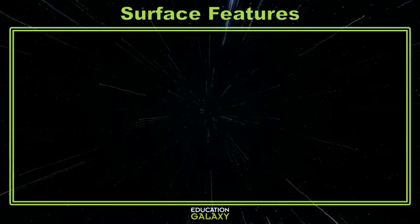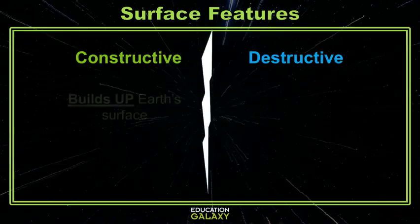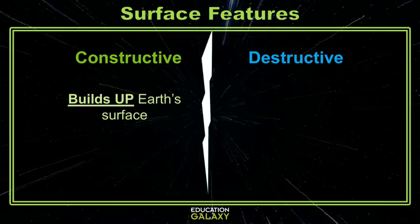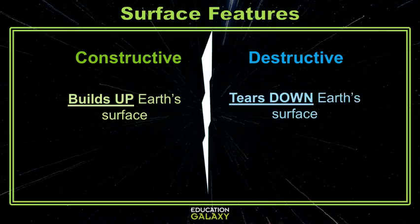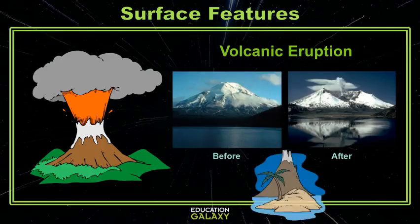There are two ways the surface of the Earth can change. It can either be a constructive change that builds up the Earth's surface, or it can be a destructive change that tears down the Earth's surface. Volcanic eruptions, where liquid magma spews out from the Earth's crust, are constructive forces, because oftentimes they make volcanic islands.